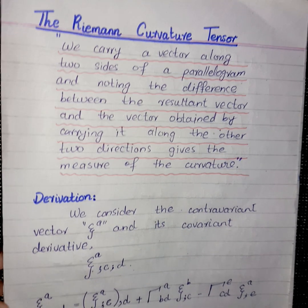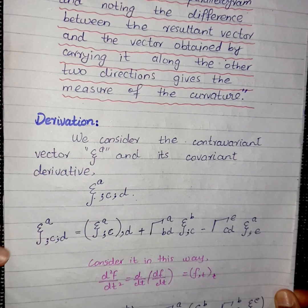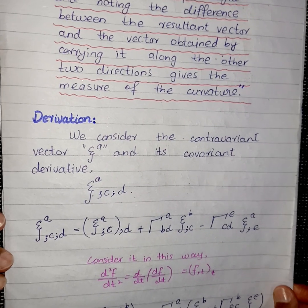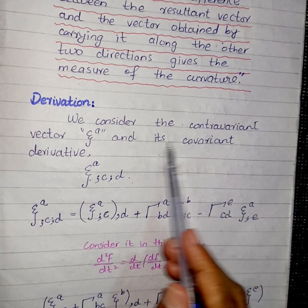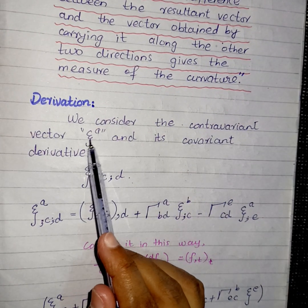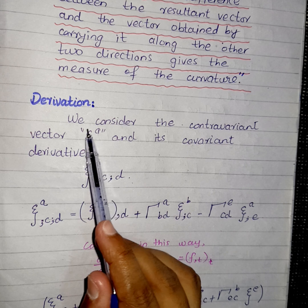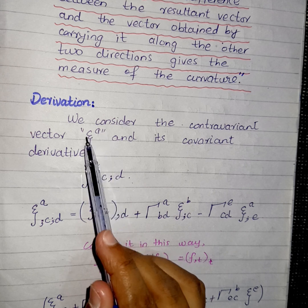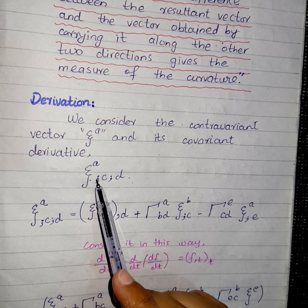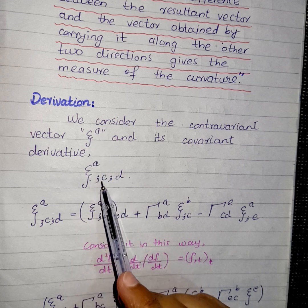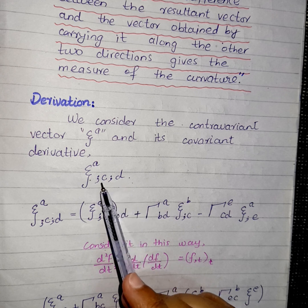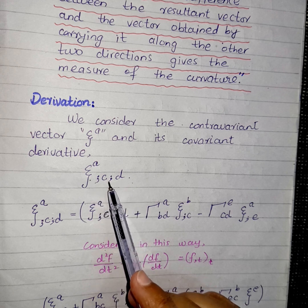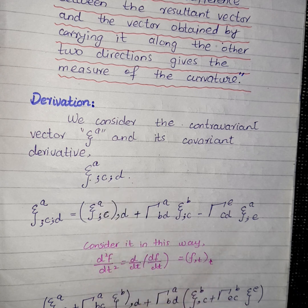Now, the derivation is very simple and straightforward. We will consider a contravariant vector ξ^A and take its covariant derivative, first with respect to C and then with respect to D. Here, the semicolon represents the covariant derivative.